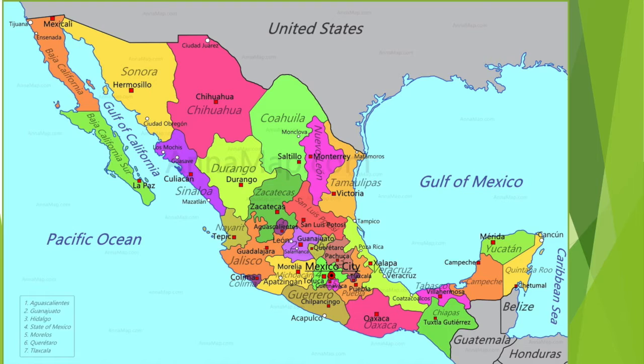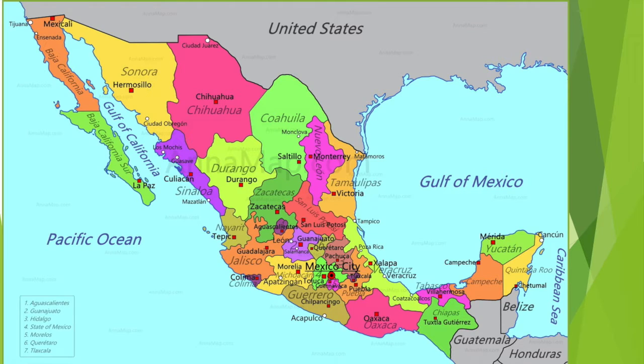This is a picture of the different states of Mexico, and you may have heard of some of them — especially right in the middle towards the bottom, Guadalajara. You'll notice that is in the state of Jalisco, so you may recognize that one for sure.